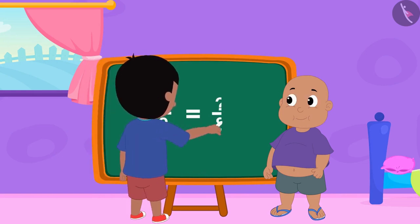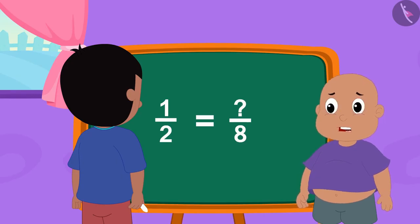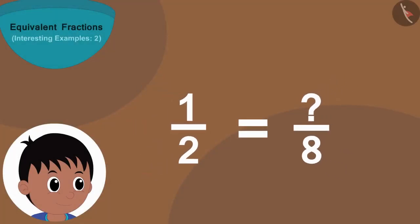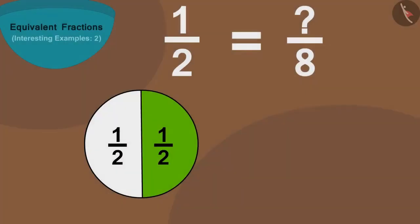Raju first wrote this fraction. Bablu started finding the fraction — children, can you help Bablu? In this fraction, the number two shows how many parts of a thing are created, and the number one shows that we took one of those two parts. Like if we divide this circle into two equal parts and fill color in one part, we can write the colored part as a fraction — one by two.